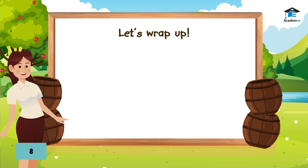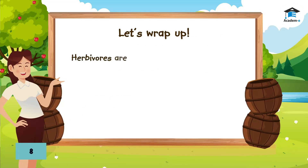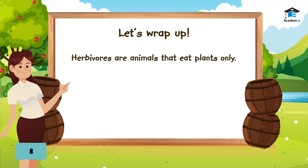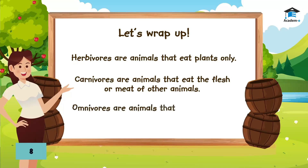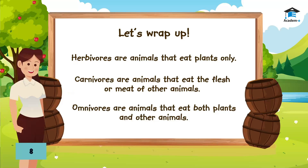Herbivores are animals that eat plants only. Carnivores are animals that eat the flesh or meat of other animals. Omnivores are animals that eat both plants and other animals.